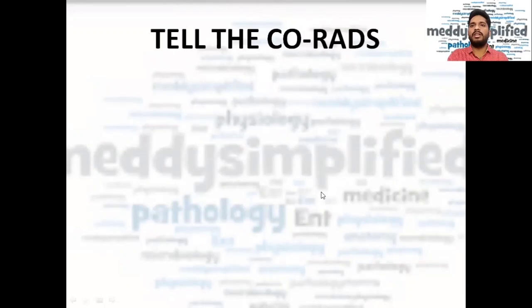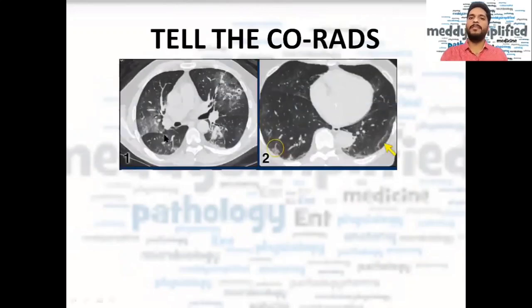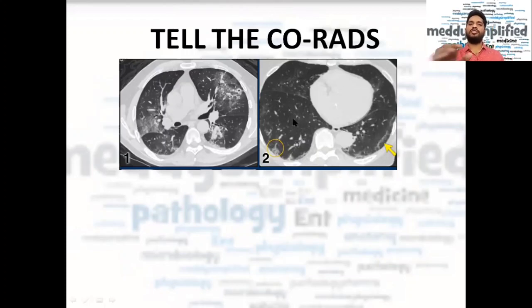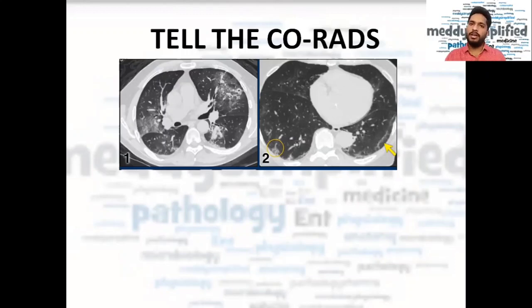Now let's look at two CT cases and try to determine their CORADS rating. Make sure to find the circle and arrow also indicated on the images. Pause the video, observe both CT scans, try to find any abnormalities, note them down, and then play the video again so we can find the answers together.